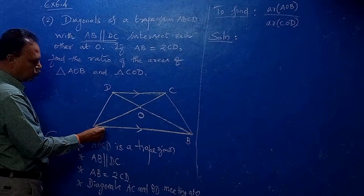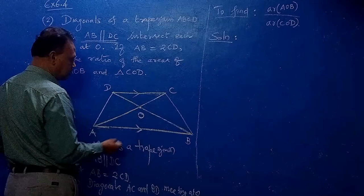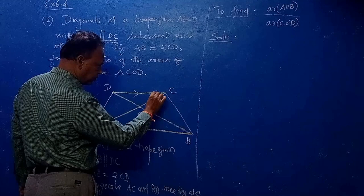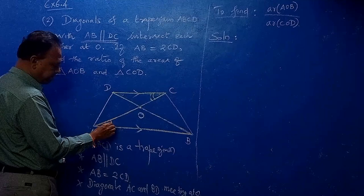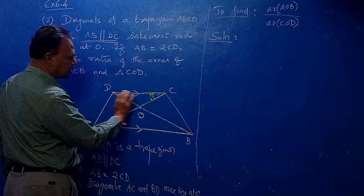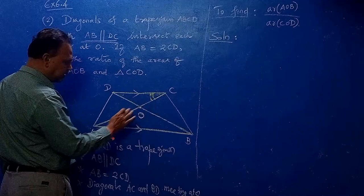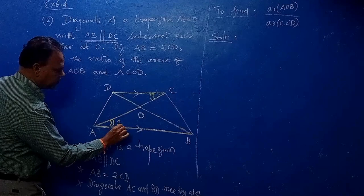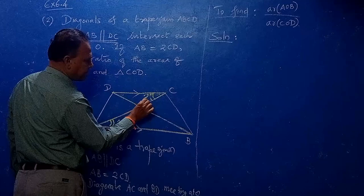Two triangles similar — we can easily prove because: angle 1 in Triangle AOB equals angle 2 in Triangle COD. Why? Alternate interior angles, because AB is parallel to CD, so alternate interior angles are equal.